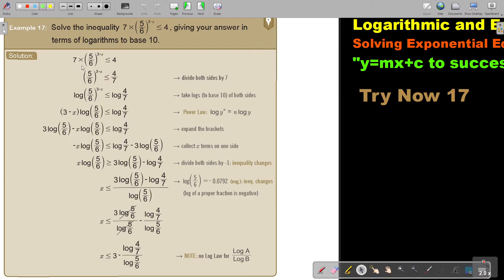So I divide both sides by 7, then I take the logs on both sides. Then I bring this one down. Then I multiply because it's in front. Then I just leave the one with the x and I take this one over.